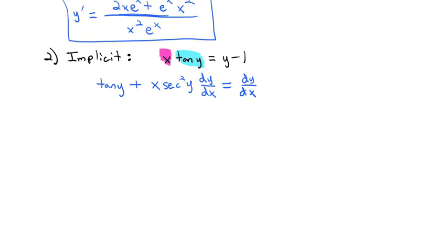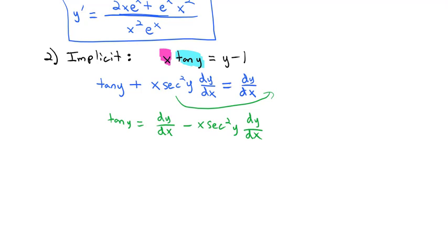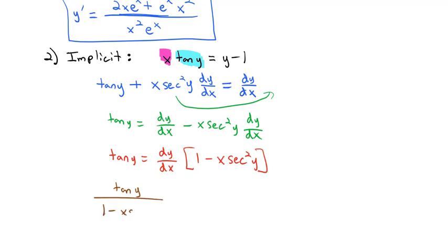So let's get all the dy/dx's on the same side by moving over to the right. We have tangent of y equals dy/dx minus x secant squared of y dy/dx. We're solving for dy/dx, so we factor that out: tangent of y equals dy/dx times (1 minus x secant squared of y). Dividing both sides, we get tangent of y over (1 minus x secant squared of y) equals our derivative dy/dx.